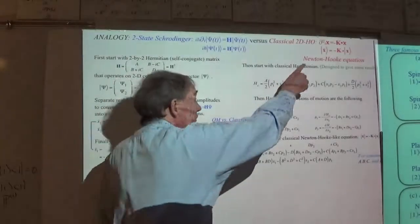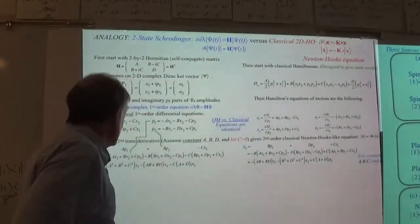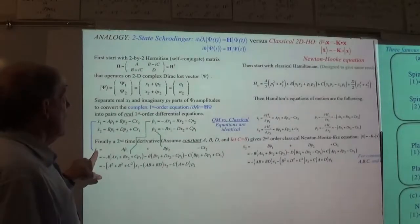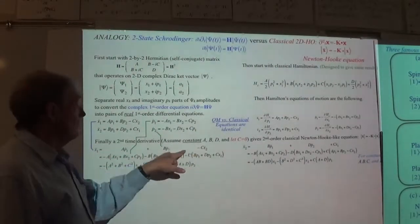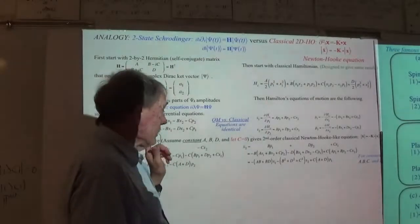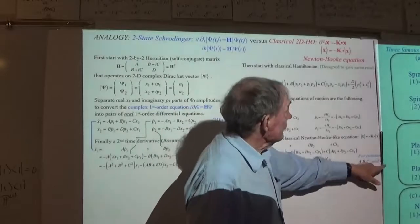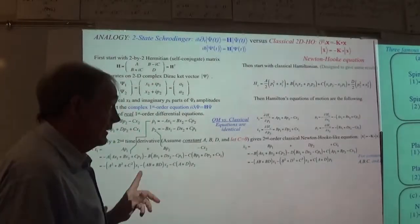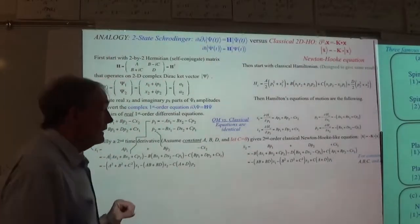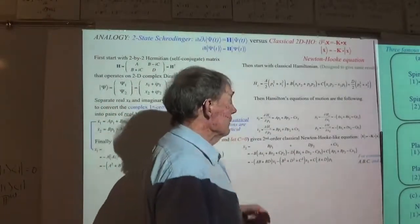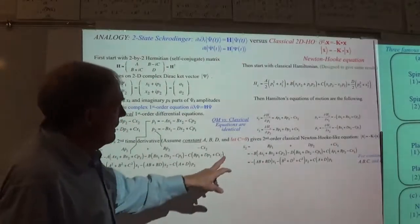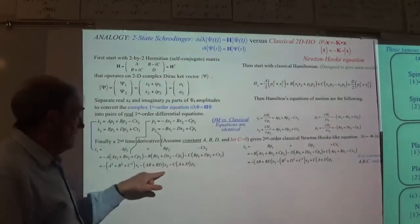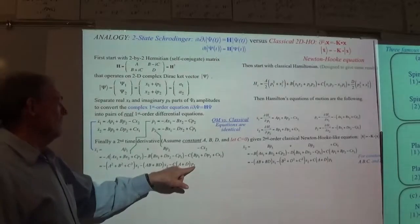What we want to do to get the second-order equation is take a derivative again of X1 to get the double derivative of X1. That comes out to be a bunch of single derivatives with the A, B parameters. Remember, all of this doesn't work unless we have constant parameters A, B, C, and D — this is a Hamiltonian with constant numbers; nobody's wiggling any of these things yet.